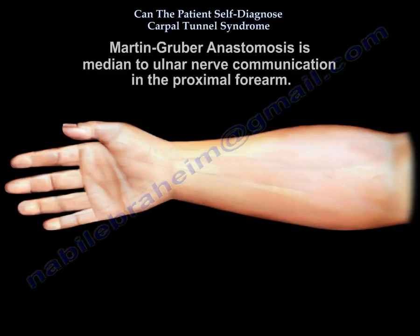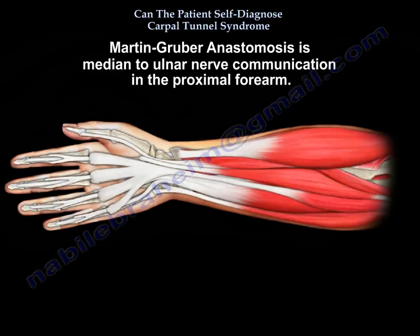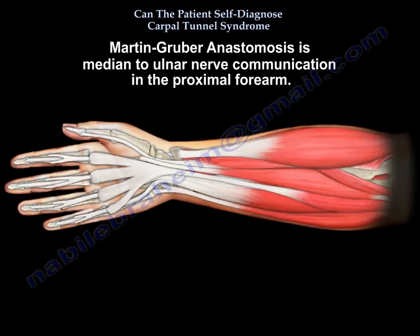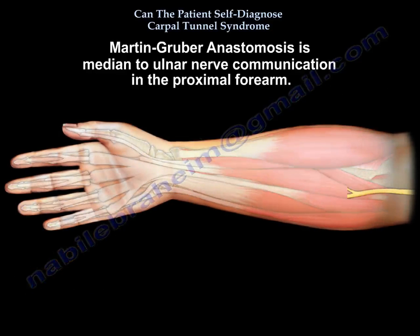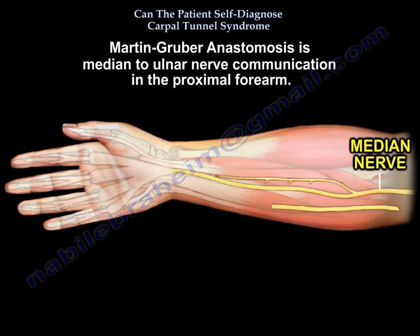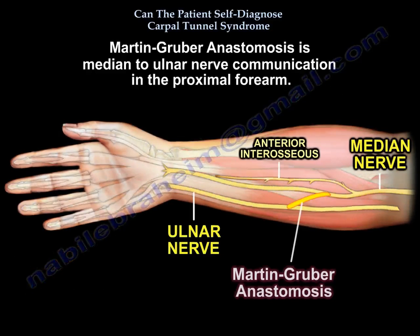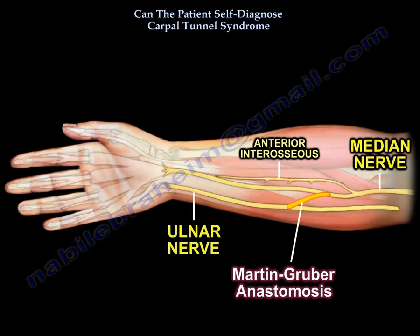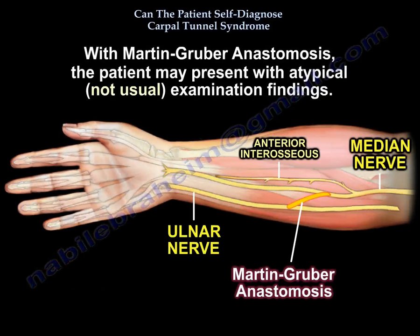Martin-Gruber Anastomosis is a median-to-ulnar nerve communication in the proximal forearm, and the patient may present with atypical exam findings.